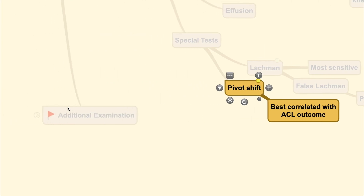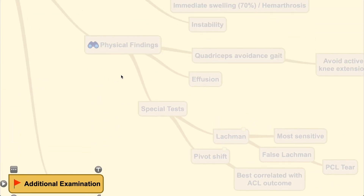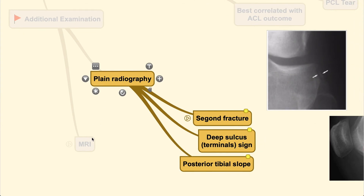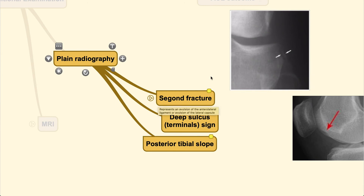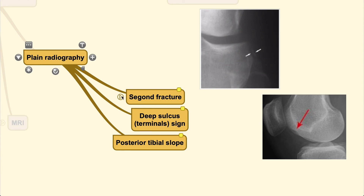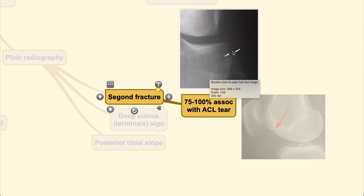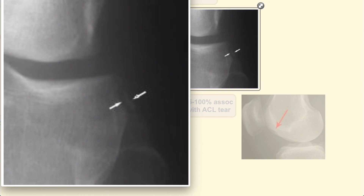For additional examination, plain radiograph and MRI are used to confirm the diagnosis. Although ACL is not directly seen on plain X-ray, it may reveal indirect signs of ACL tear. The first indirect sign is the Segond fracture — an avulsion at the insertion site of the anterolateral capsule and anterolateral ligament, visible as a bony chip at the lateral aspect of the tibia.